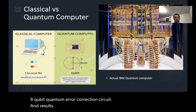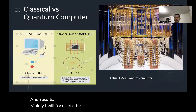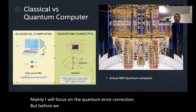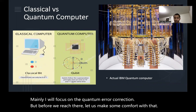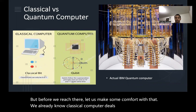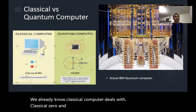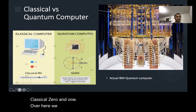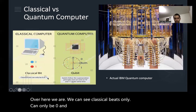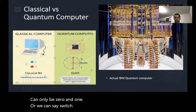Mainly I'll focus on quantum error correction, but before we get there let us get comfortable with what we already know. A classical computer is built with classical bits like zero and one — we can say switch on and switch off.